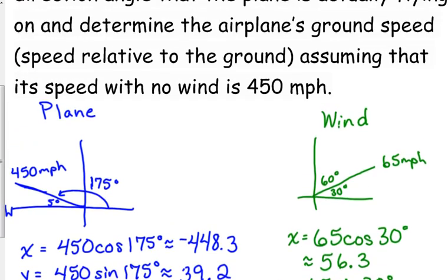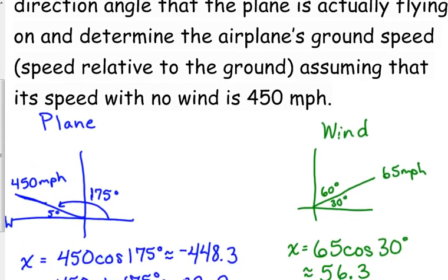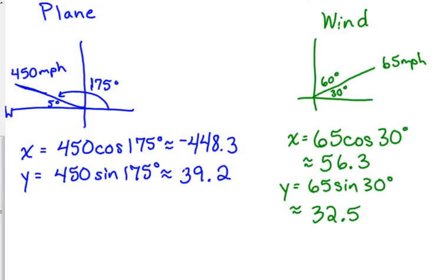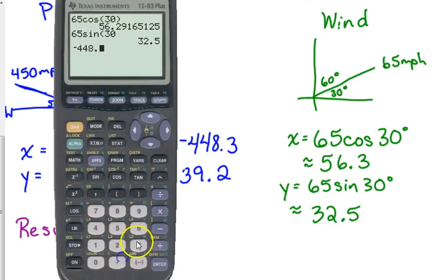Now we want to find the actual speed and the actual direction. We've got to add these together. We broke them down into their components so that we could combine them. We cannot just add 450 and 65 because they're in different directions. We've got to add their components together. So the resultant, add the x's: negative 448.3 plus 56.3.